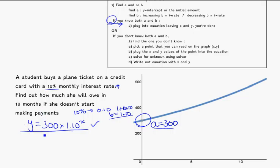The next thing is using it. So 10 months, as an example, that's time along your x-axis. When x equals 10, how much money will she owe? To figure that out, y equals 300 times 1.10 to the power of 10.